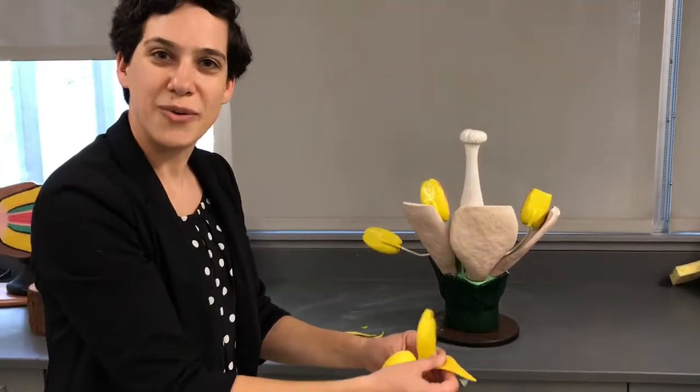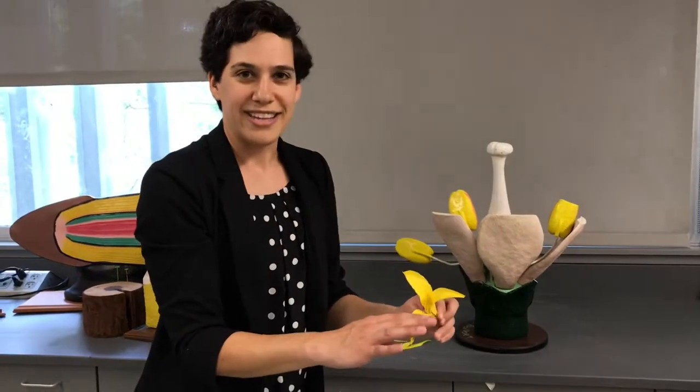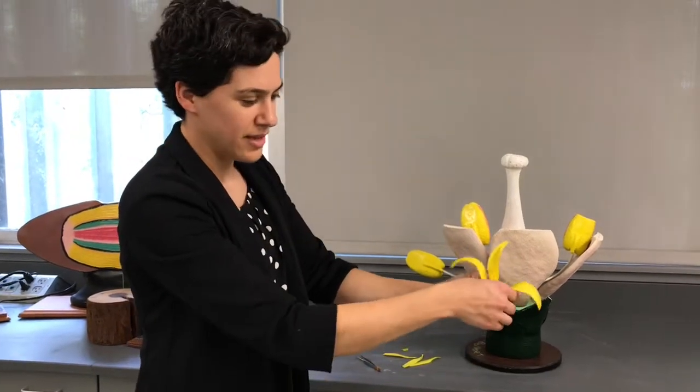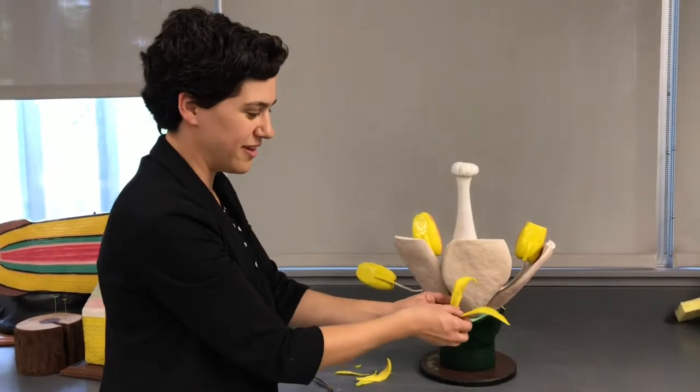Petals are often showy and colorful, and sometimes they can even provide landing platforms for pollinators, like insects, birds, or bats. So I'm going to peel off the petals now so we can see what's inside our flower.